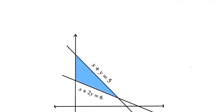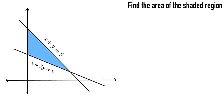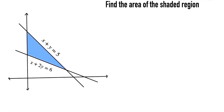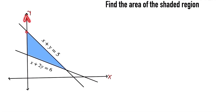Welcome back. I hope you have tried this question, so let's see the solution. We have to find the area of the shaded region. Here is the line, and the equations of both lines are given: x plus y is equal to 5, and x plus 2y is equal to 6. Let's identify the coordinates y and x.